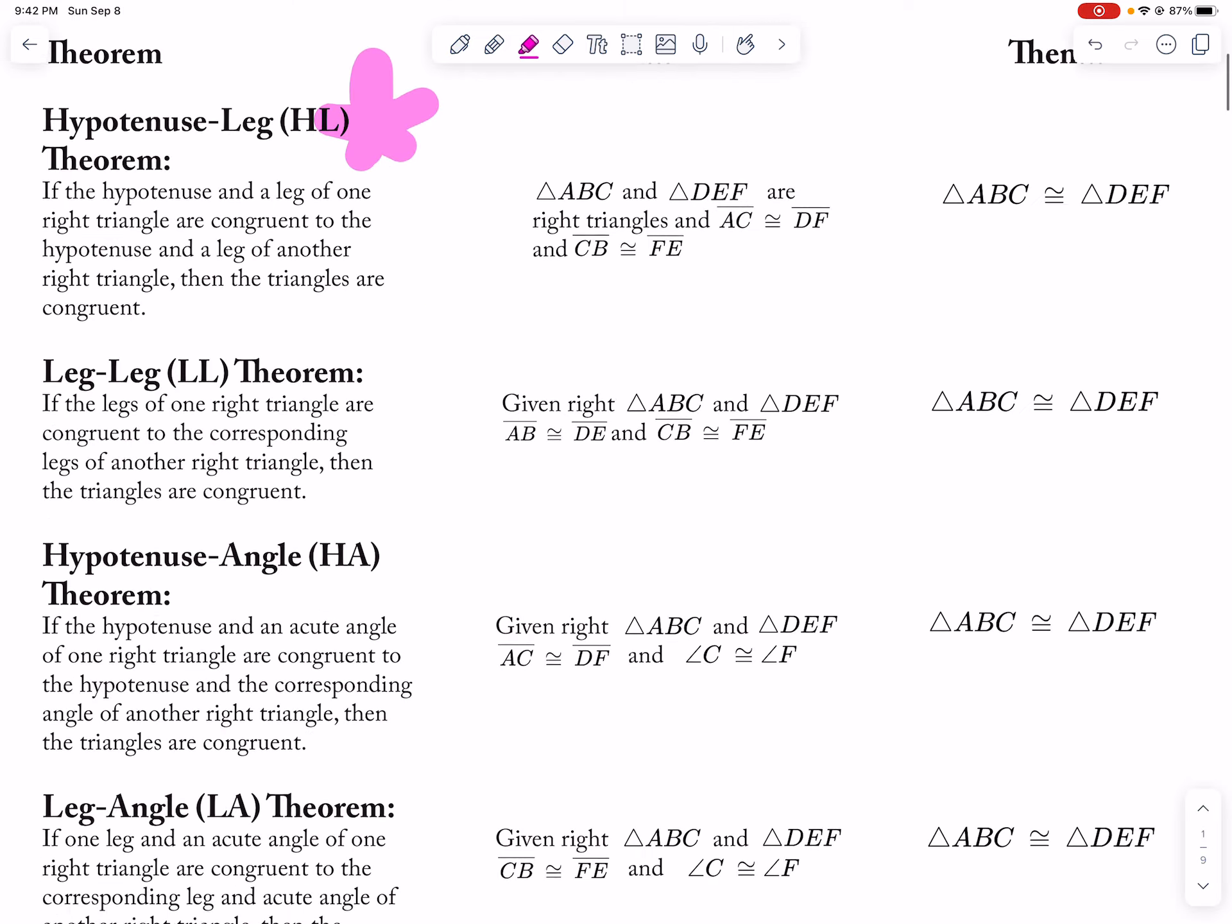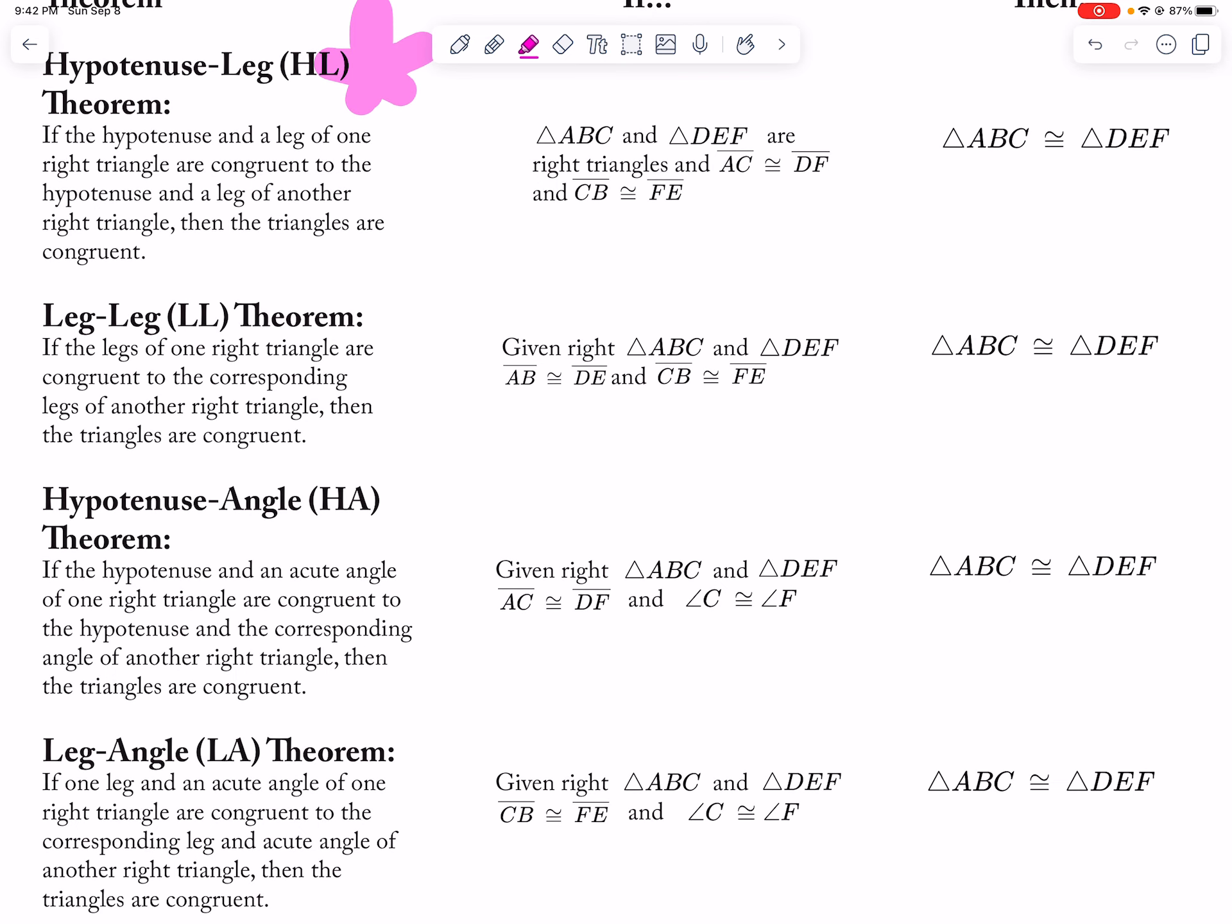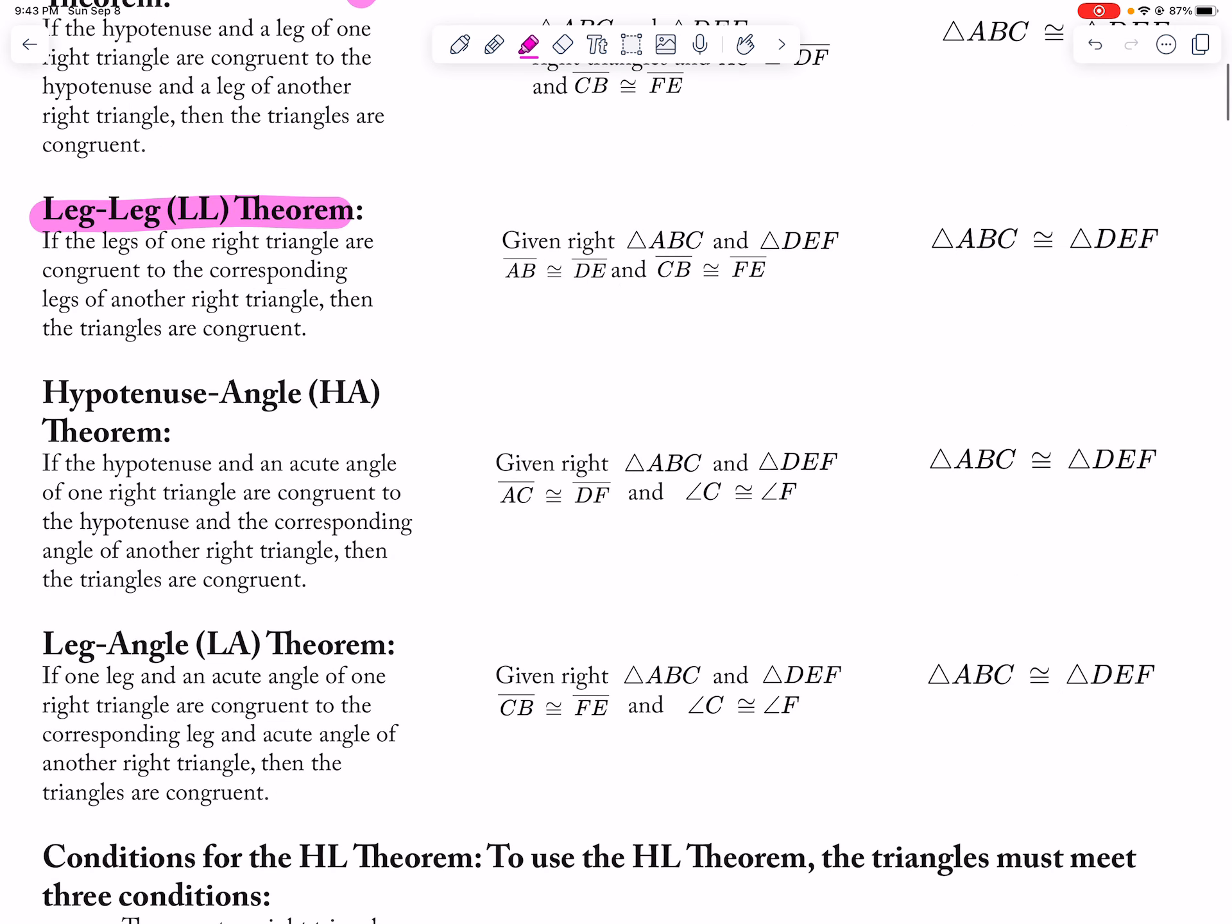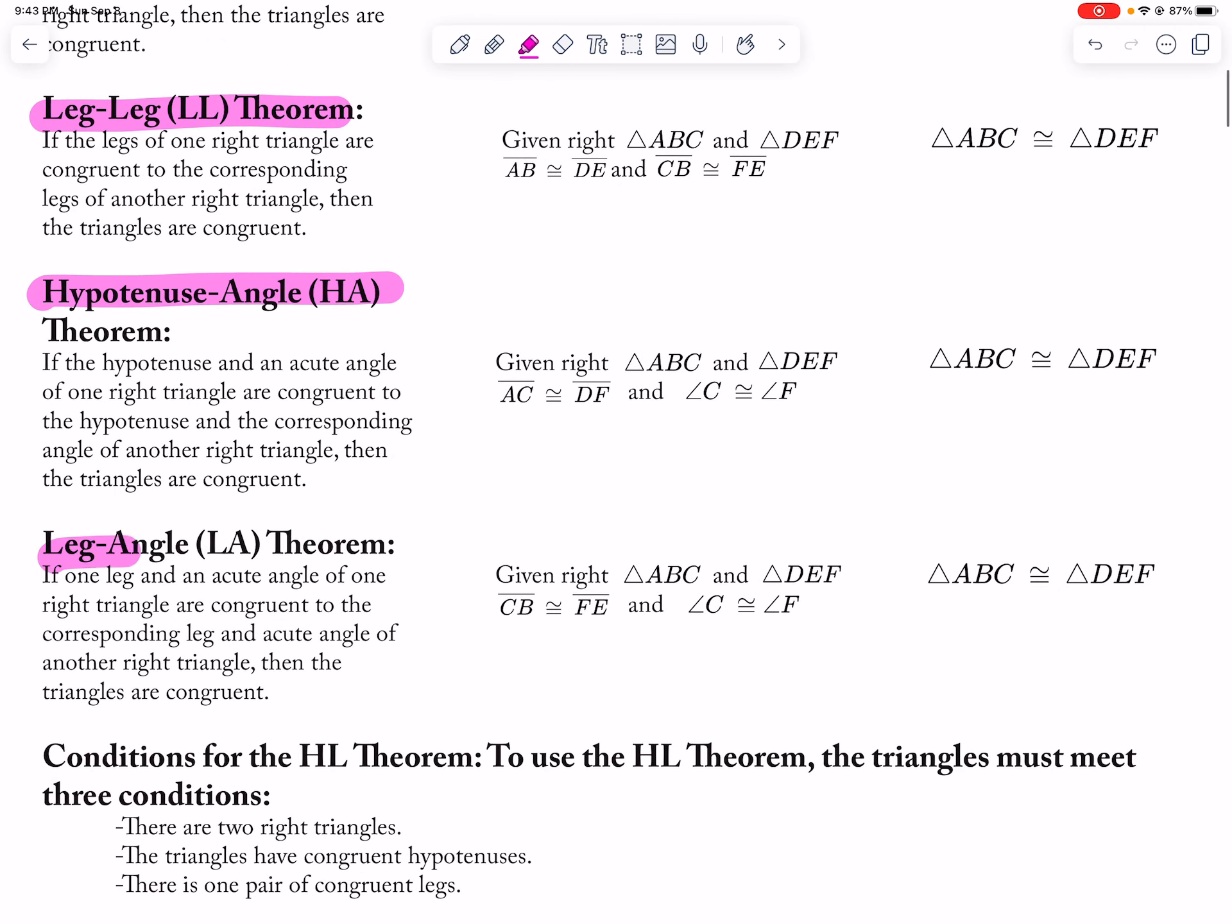The other ones you can prove triangles are congruent without needing them because you can use like side angle side or side side side, but you could use these like leg-leg, hypotenuse angle, leg angle.